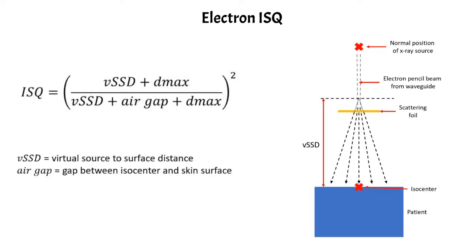And then the air gap would simply be the distance from the isocenter to your surface of the patient if you had an extended SSD. And that's how you calculate your inverse square correction.